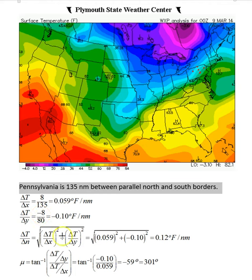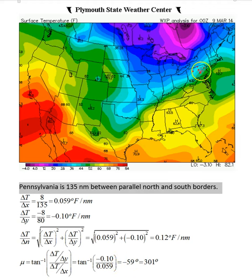To find the direction of the gradient, we see that mu, the angle with respect to the x-axis — so this is a math angle — is equal to the arctangent of the gradient in y divided by the gradient in x. That would be the arctangent of minus 0.1 over 0.059, which is minus 59 degrees, measured from the x-axis. It's the same as if we went all the way around and got 301 degrees for alpha if we were looking at the math angle.